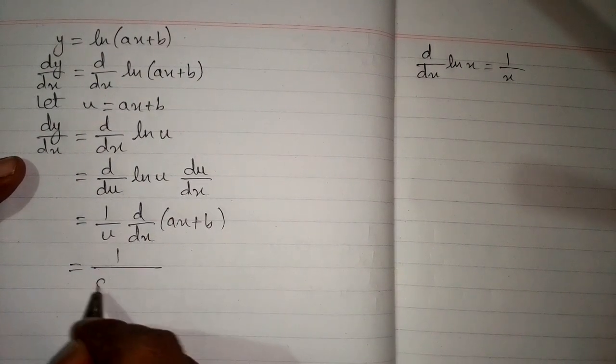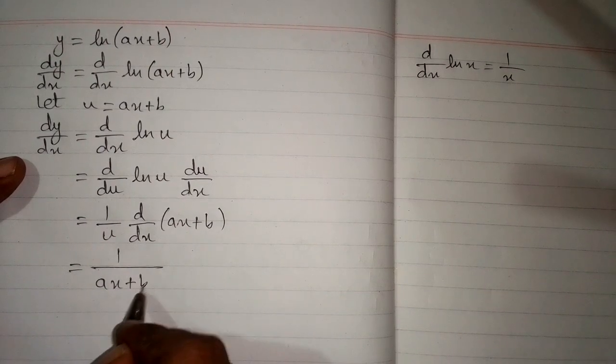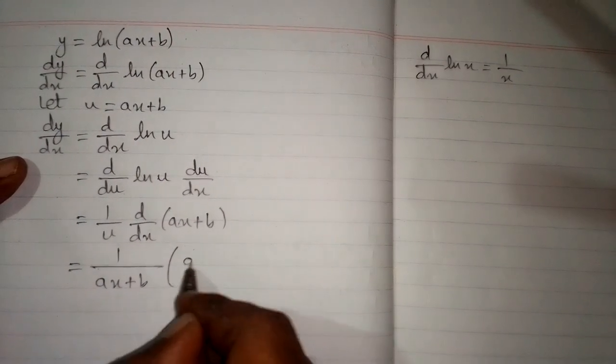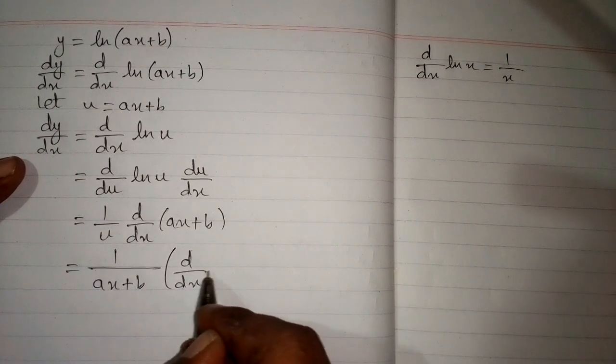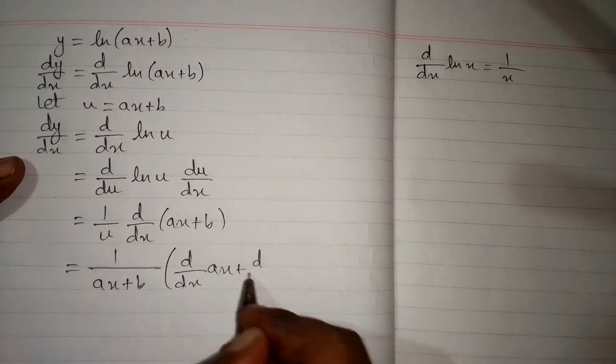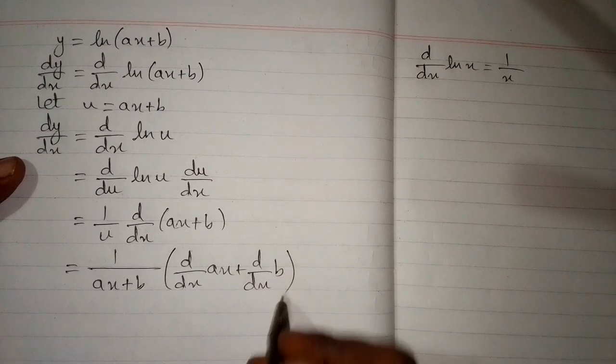Now we put the value of u over here, so we have 1 upon ax plus b. And here we have two terms, so we will apply derivative on both the terms. So we have d/dx of ax and d/dx of b.